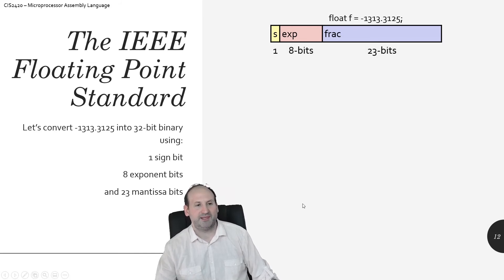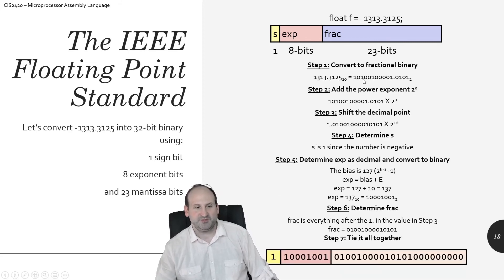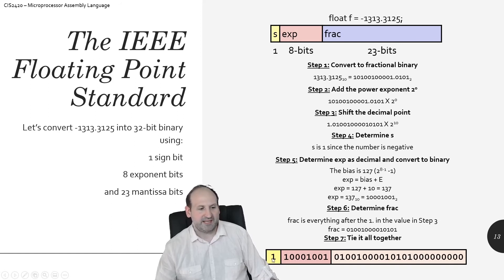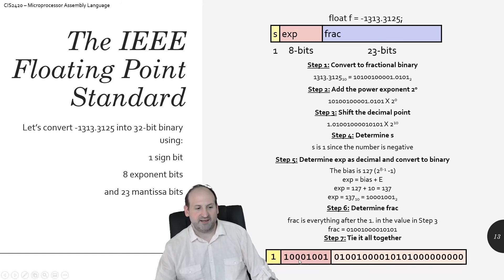For negative 1313.3125, all I know upfront is the sign bit will be one because it's negative. 1313 takes a lot of bits in binary. 0.3125 is 5 sixteenths. Same rules apply: put the times two to the zero power, move the decimal place — I have to do it 10 times to make it one point something. I fill in the fractional component up to 23 total digits with zeros at the end. Then I take my exponent of ten, add the bias of 127, and get 137. Convert 137 to binary and jam it in the exponent spots.